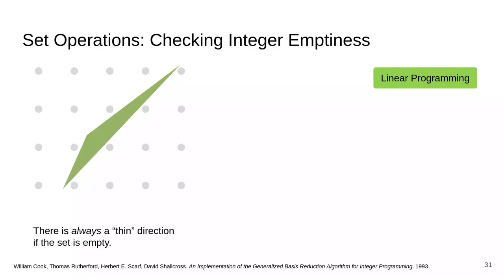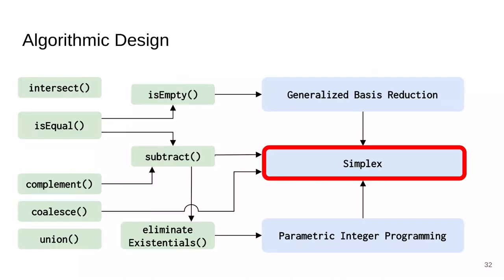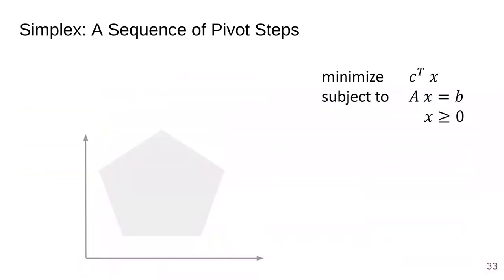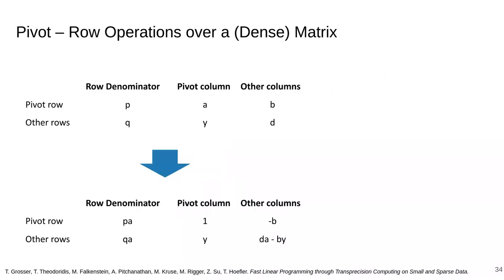We saw that the integer emptiness operation uses linear programming. We implement linear programming using the simplex algorithm, which can also be accelerated using transprecision computing and vectorization. The simplex algorithm can be seen as a sequence of pivot steps. Initially, we find a point satisfying all the constraints, and then we perform pivots which decrease the objective value while making sure that the point still satisfies all the constraints. We keep doing this until we can't anymore, which means that we have found the point minimizing the objective function. This was a geometric way of seeing the algorithm. However, in the implementation, a pivot step is just a series of row operations over a matrix. As a result, this can also be accelerated using vectorization.